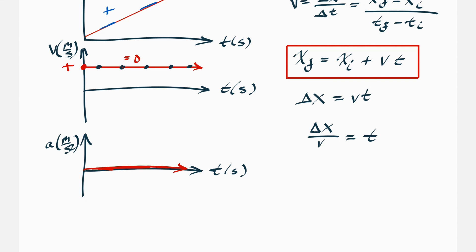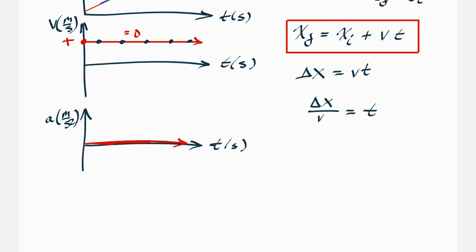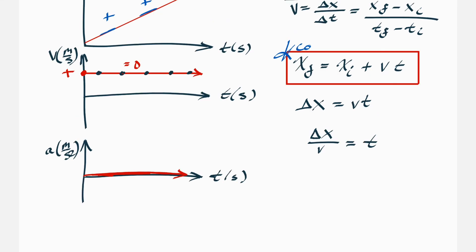Not every question will want delta x directly — sometimes you'll need to plug in a value for x final or x initial and solve for the other. This is the most general form of the equation and is always true for constant velocity motion in a straight line. There are very few exceptions as long as we have constant velocity motion.